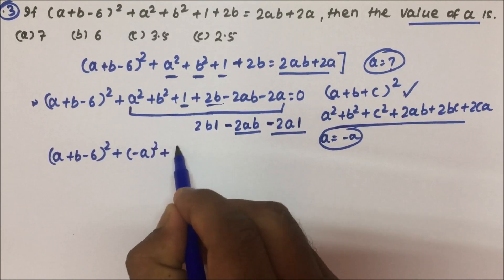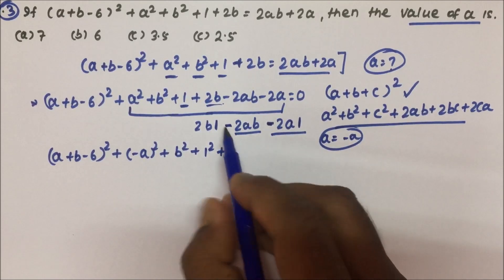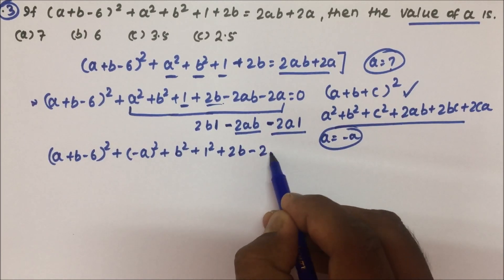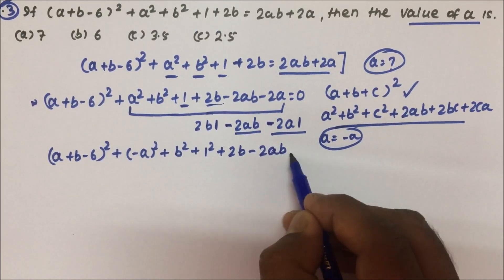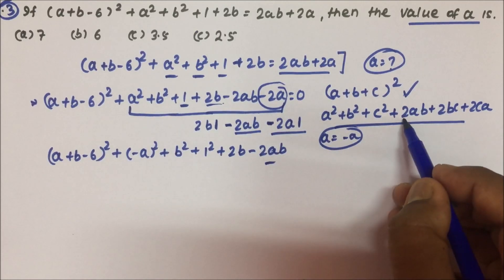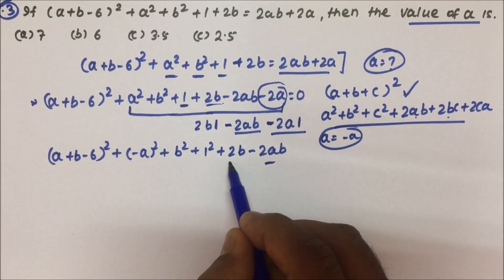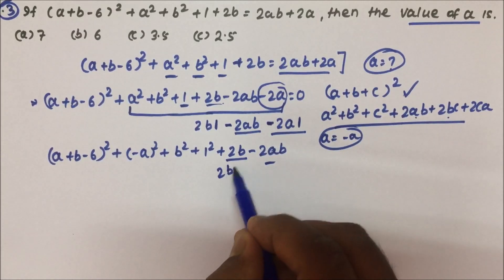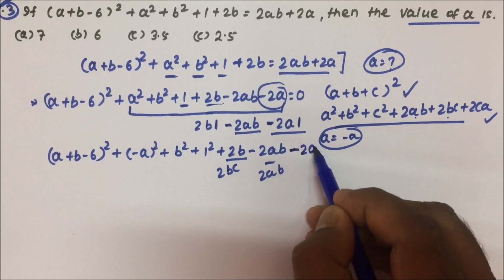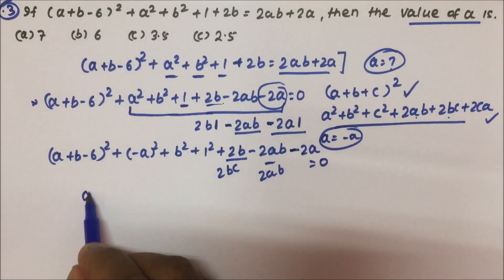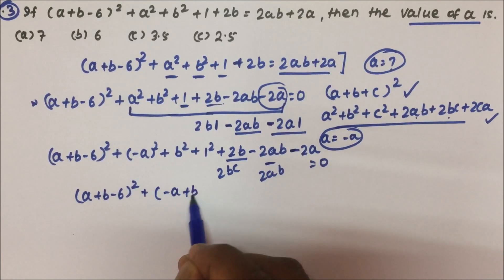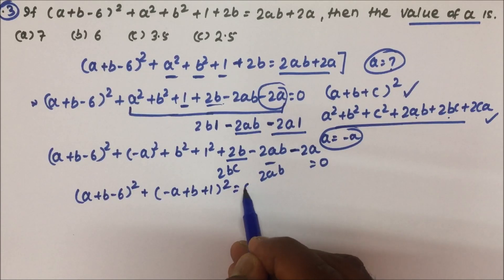So I can write: (a + b − 6)² + (−a)² + b² + 1² + 2b(1) − 2(−a)(b) + 2(−a)(1) — which corresponds to (−a + b + 1)². So this becomes (a + b − 6)² + (−a + b + 1)² = 0.